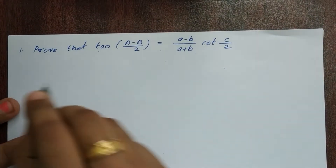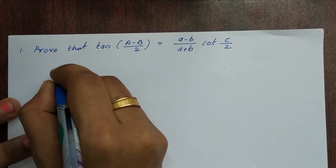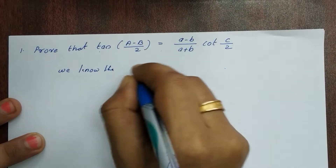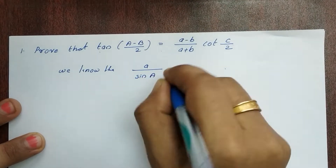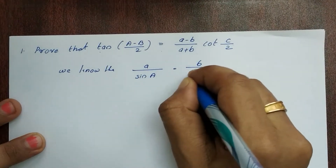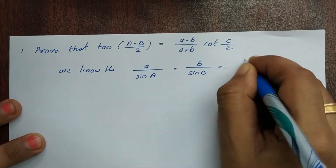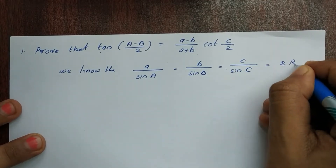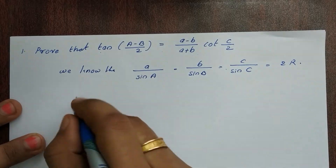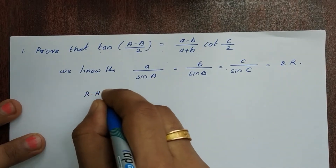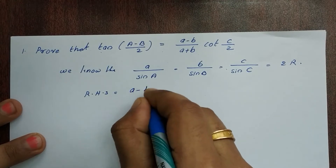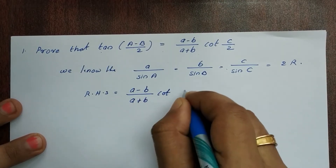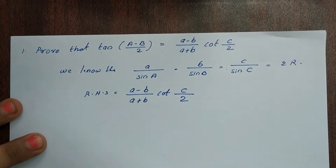So we will derive the result. We know that by the sine rule: a divided by sin A is equal to b divided by sin B, is equal to c divided by sin C, is equal to 2r. This is the same type: (a minus b) divided by (a plus b) into cot C by 2.